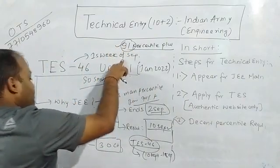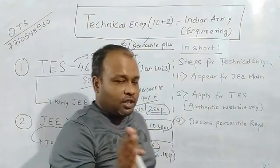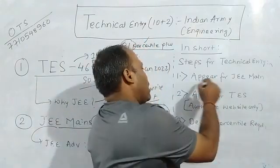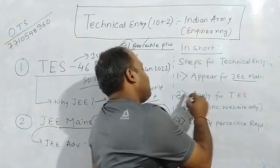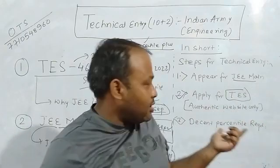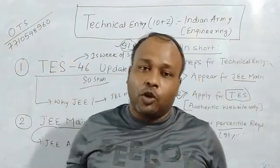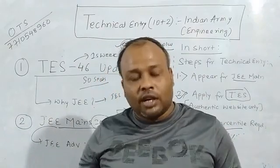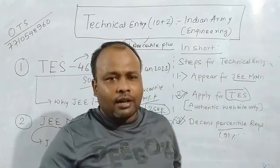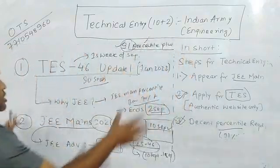In brief: the TES 46 form will be coming out after the first week of September — expect it around 10th September. You need to appear for JEE Mains with 91 percentile plus. For those unaware of how to apply: if not this year then next year, you'll need to give JEE Mains, then apply on the authentic website joinindianarmy.nic.in — do not register on .co.in. Get a decent percentile of 91+. These are the three simple steps to get an SSB call. Cutoff may go up to 94 depending on the number of applicants.